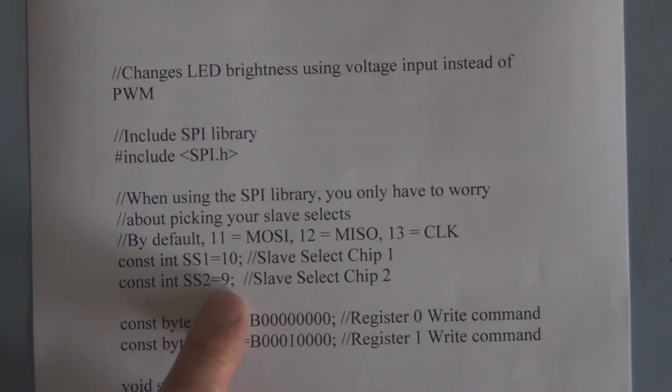Once we select chip 1 or chip 2, we then have to address digital pot 0 or digital pot 1, and we do that by declaring register 0 and register 1 and assigning them binary numbers. The 1 will address digital potentiometer 1 and the 0 will address digital potentiometer 2. Depending on which one you're using, you then have access to control that potentiometer.